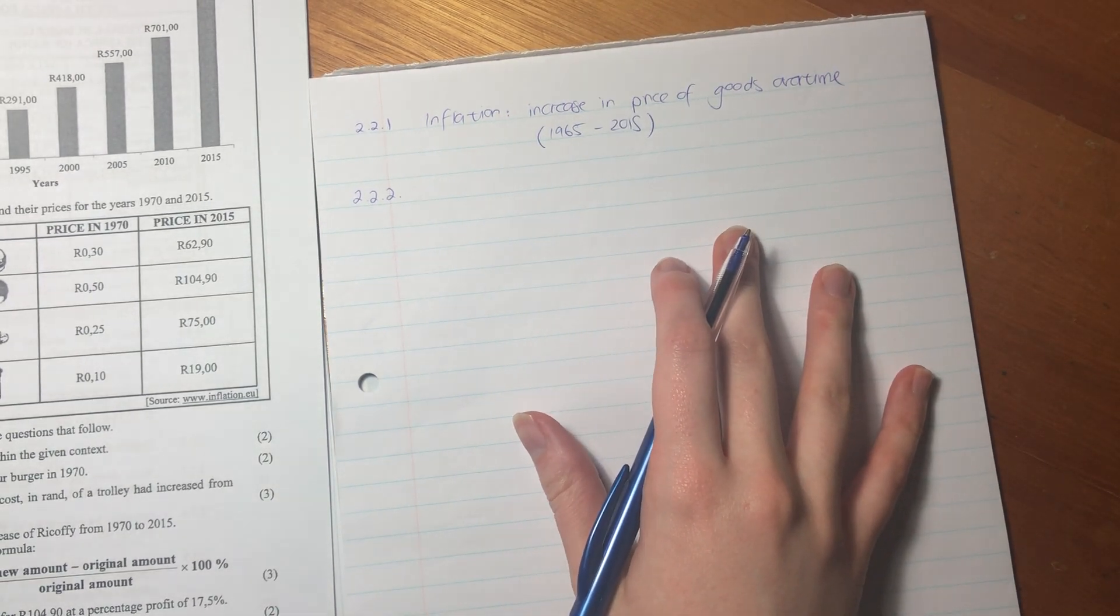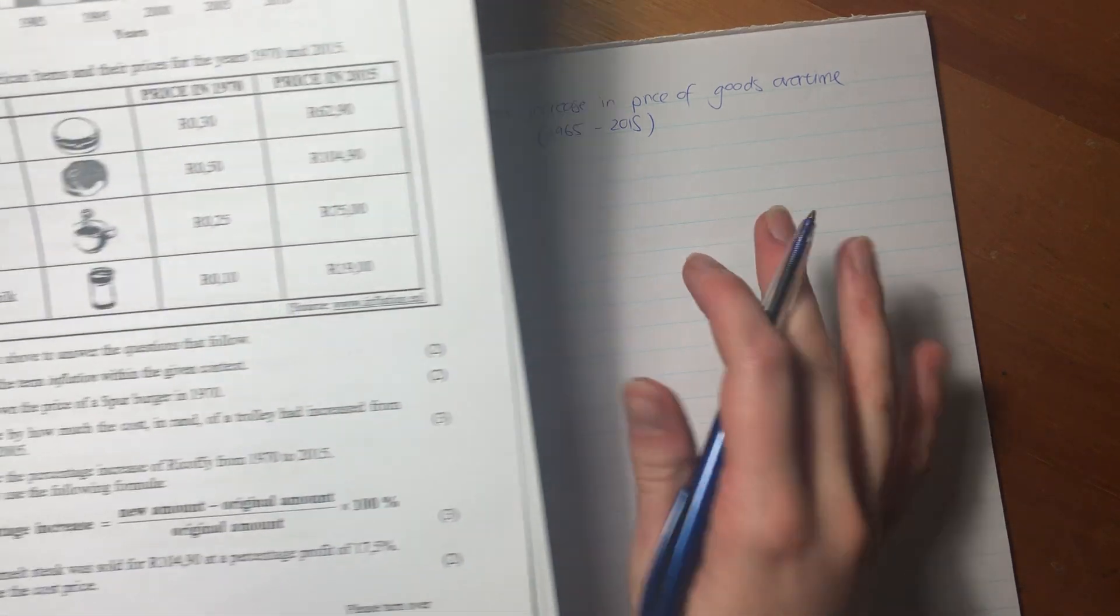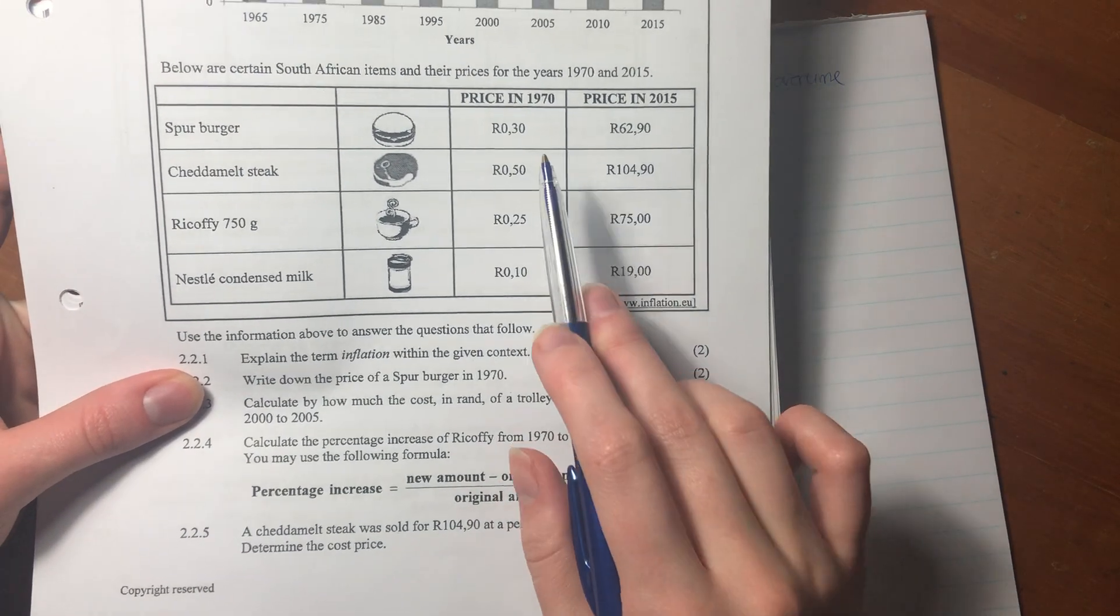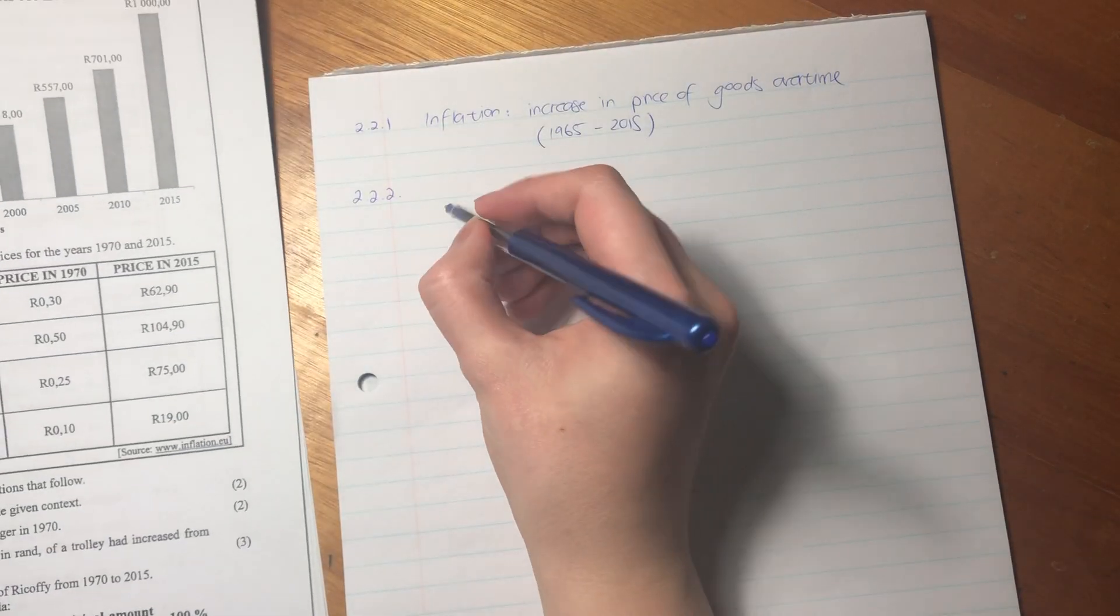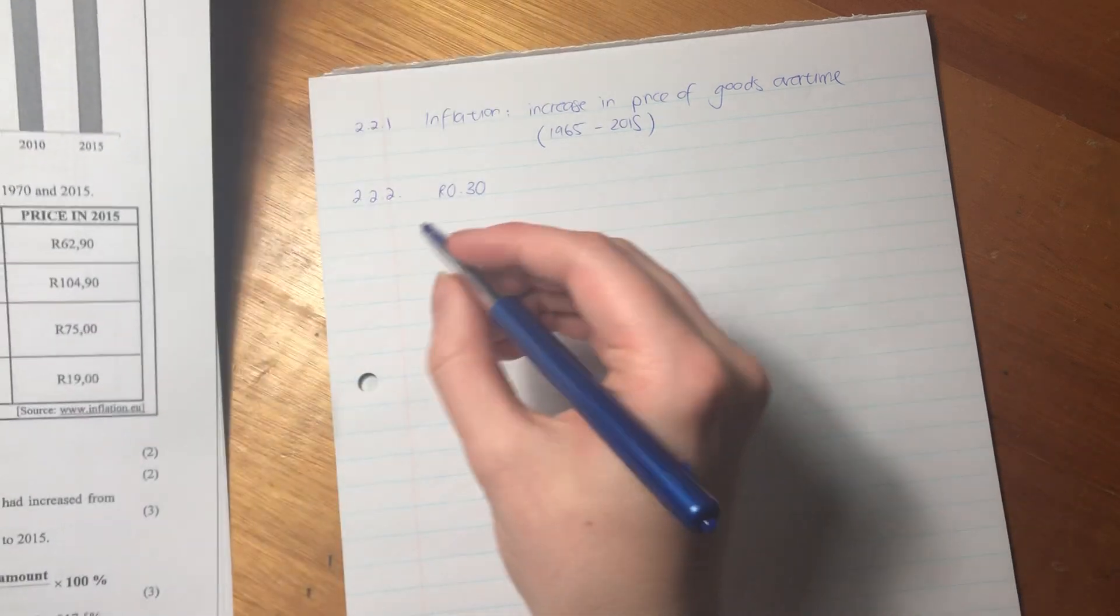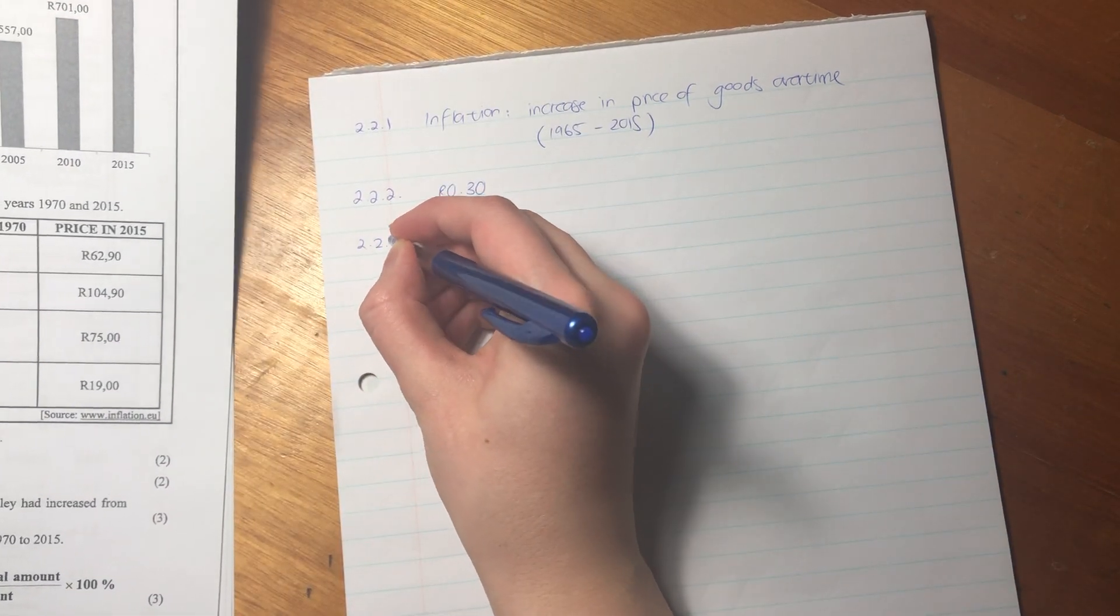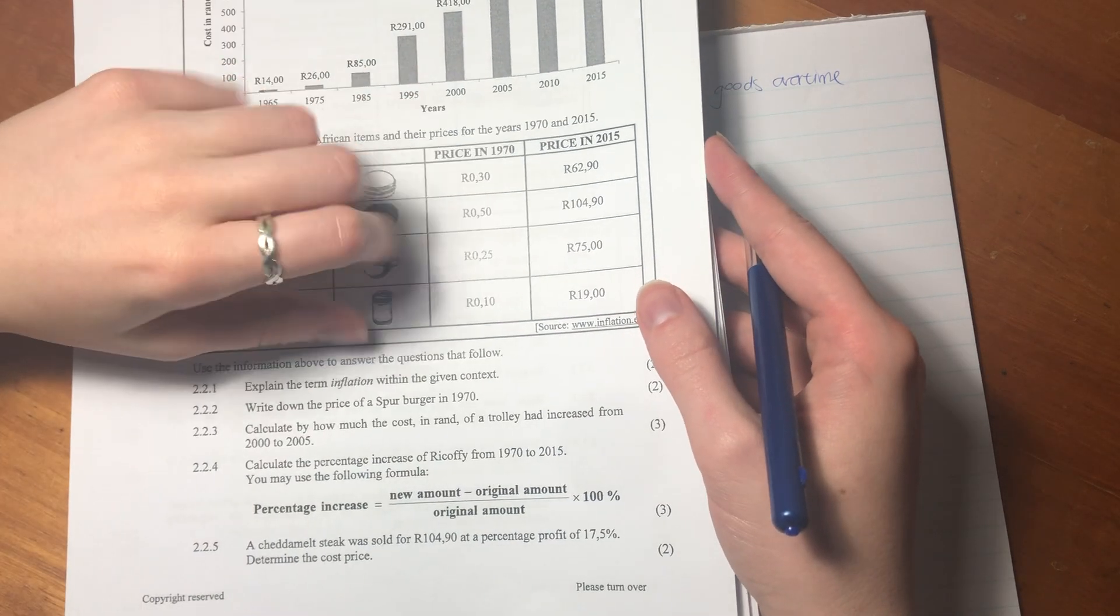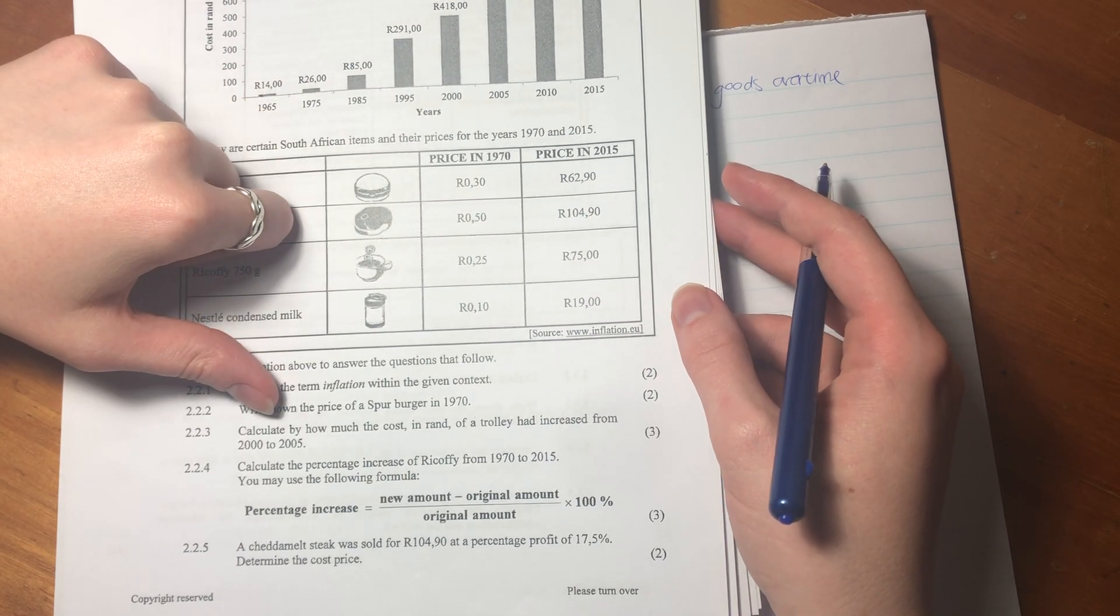So let's now move on to the second question. It says write down the price of a Spur Burger in 1970. So Spur Burger is 30 cents. Those are very entry-level questions.